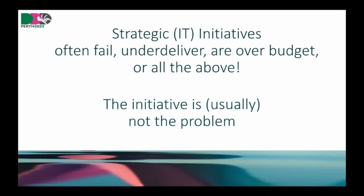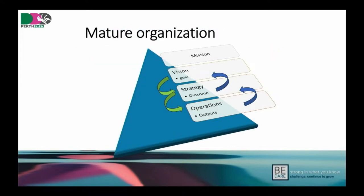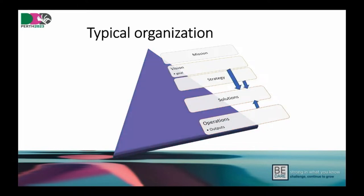So the initiative is not the problem. What is the real problem in IT for years and years? The problem is that we have different types of organizations. We have mature organizations that are perfectly able to say: we have a vision, that means we have this goal, that means we need this strategy which should produce this outcome linked back to the goal. And if we have this strategy, then we have the outputs that actually provide the outcome we're looking for.